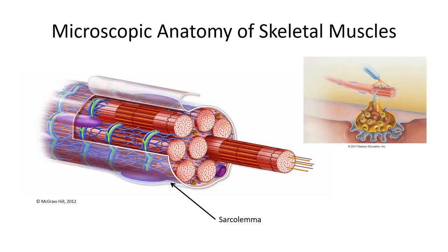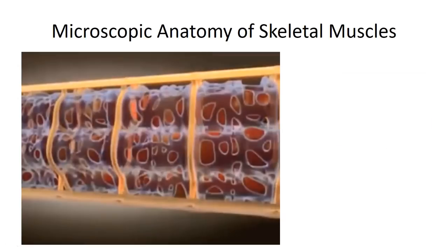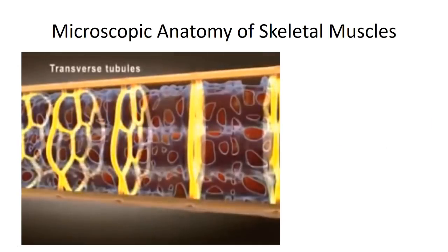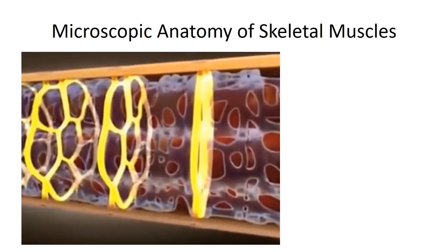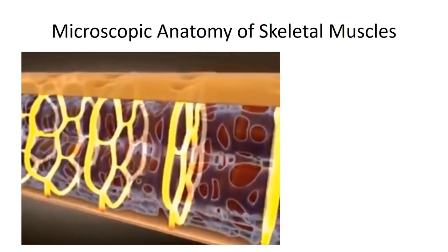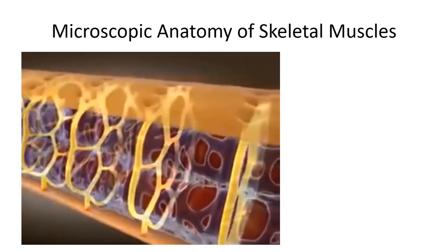The membrane is further specialized in the region of the neuromuscular junction, where it communicates with the axon terminus of its alpha motor neuron. In this region, the membrane folds in upon itself to increase the surface area and facilitate the transmission of neural impulses. This region of the membrane is also rich in acetylcholine receptors, which bind the neurotransmitters secreted by the alpha motor neuron axon terminus.